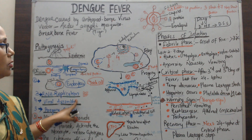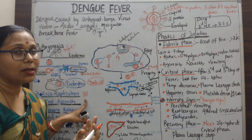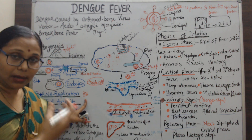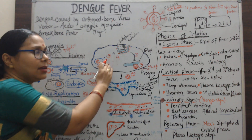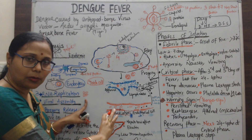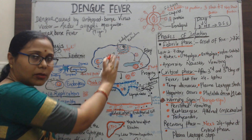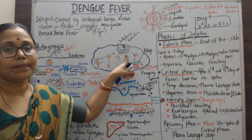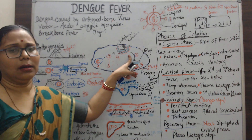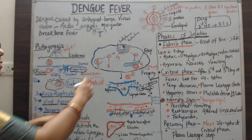The RNA replication takes place in the cytoplasm. Then, to form a complete viral structure, the RNA needs protein, so it moves to the endoplasmic reticulum, which is present very close to the nucleus. The viral RNA reaches the endoplasmic reticulum — this step is called viral assembly.